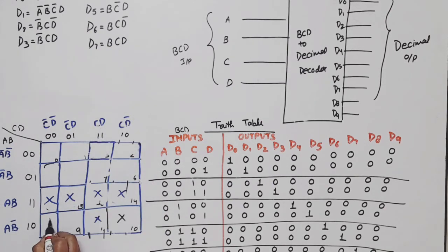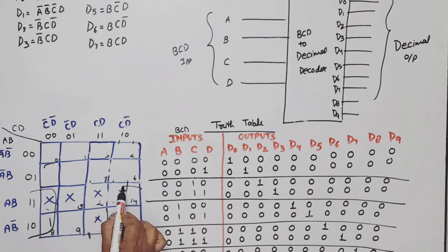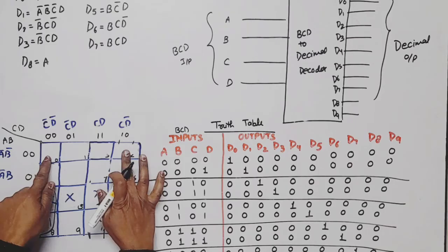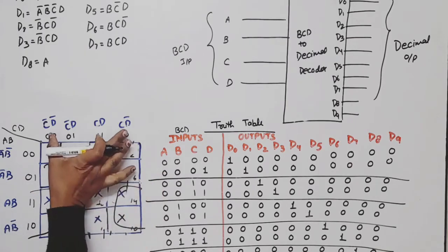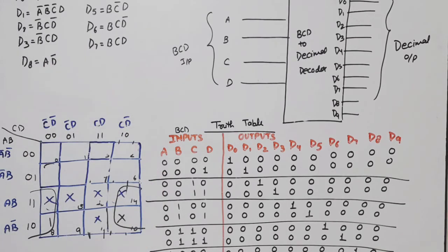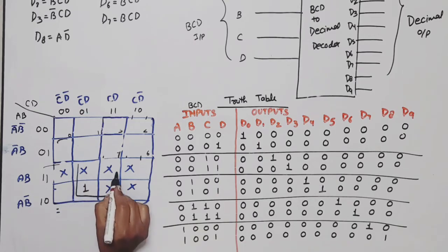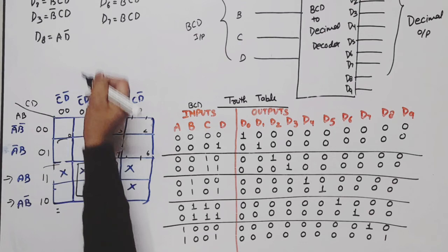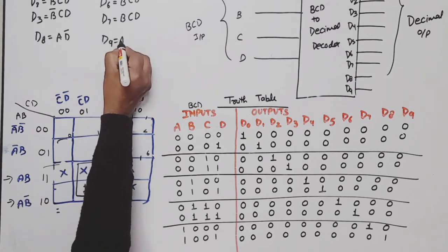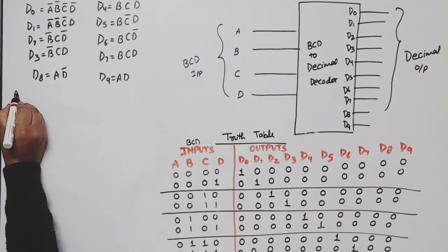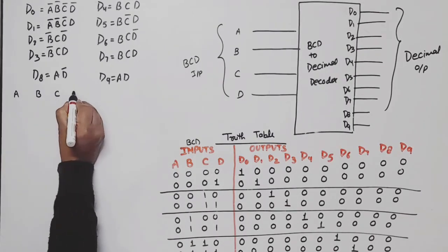For D8, the combination is 1000. Using the K-map, the quad is formed with this row. D8 equals A·D-bar. For D9, combination 1001; common value is A, and from the columns D is common, so D9 equals A·D. So these are the Boolean equations for all outputs. We have four variables: A, B, C, and D.